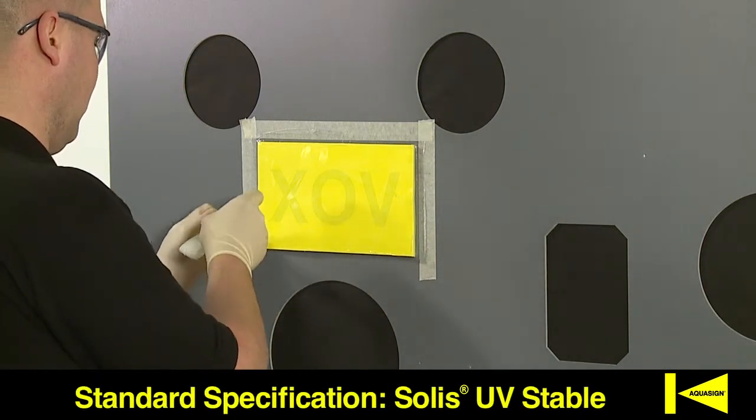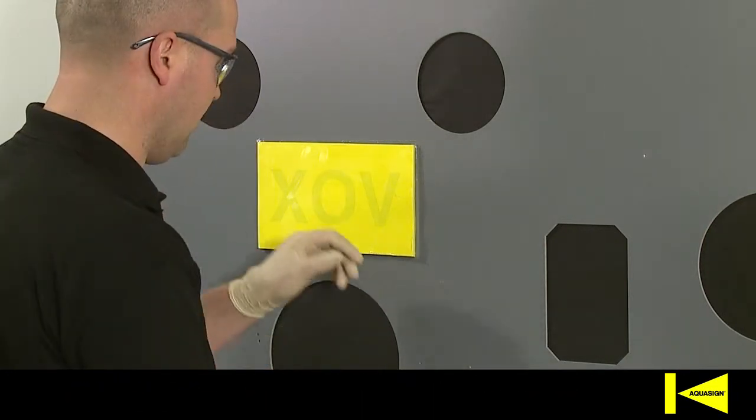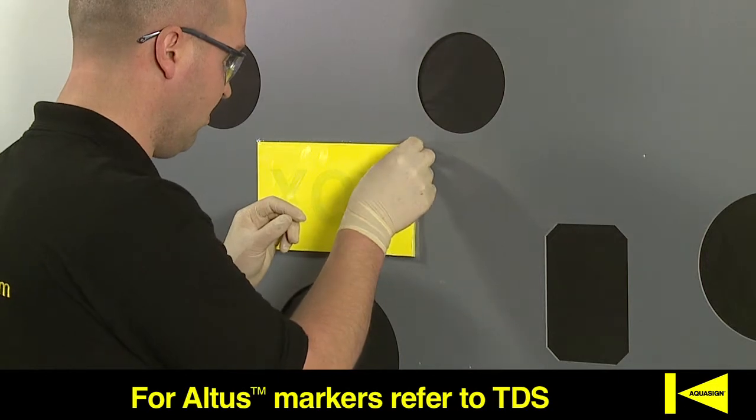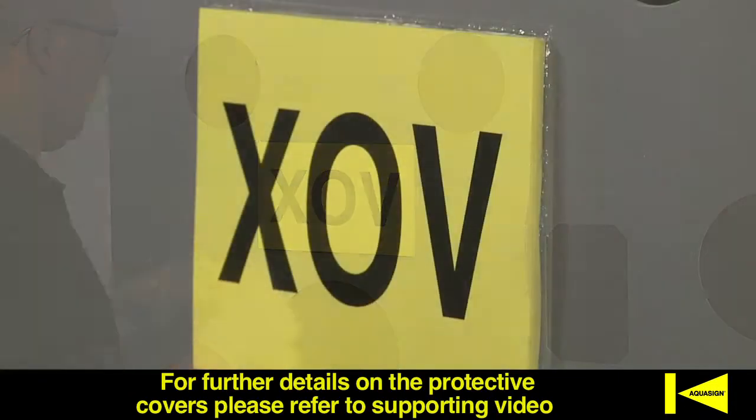Solis markers do not need protecting from sunlight. This means the protective covers can be removed at any time following installation, although we recommend these are kept in place to keep the marker clean during storage and transportation. For further details on the protective covers, please refer to our supporting video.